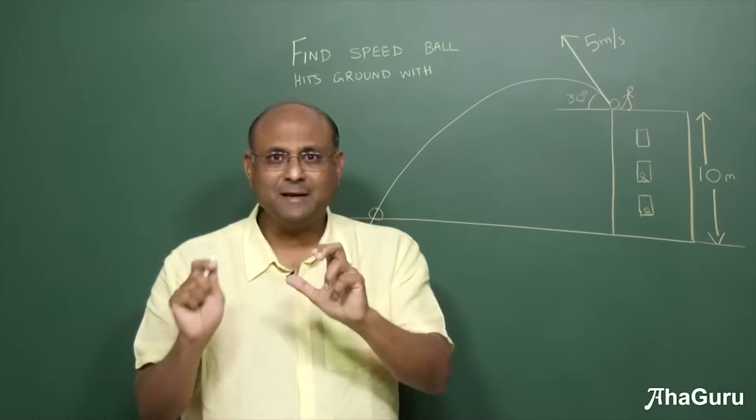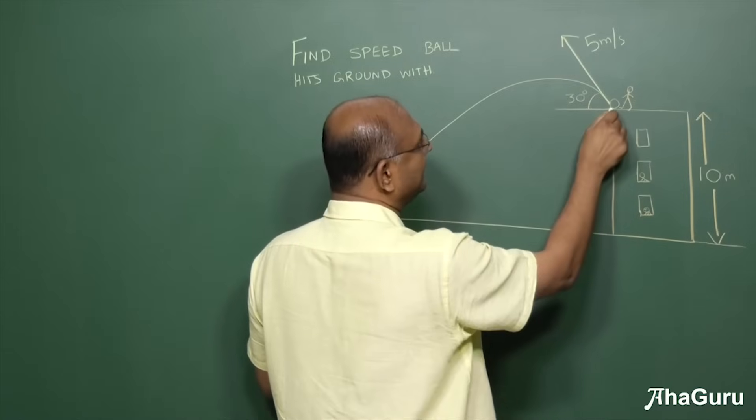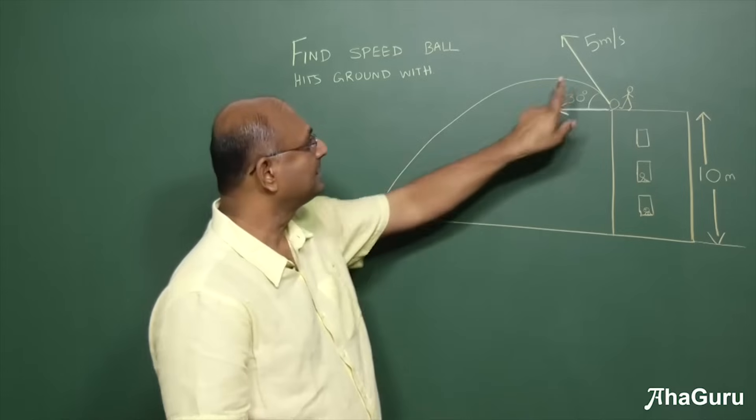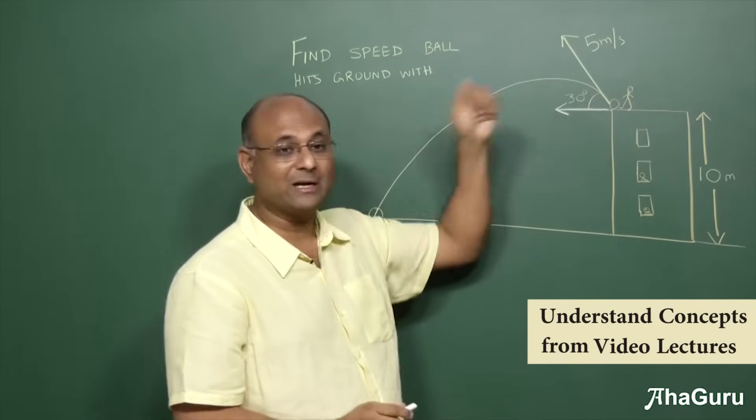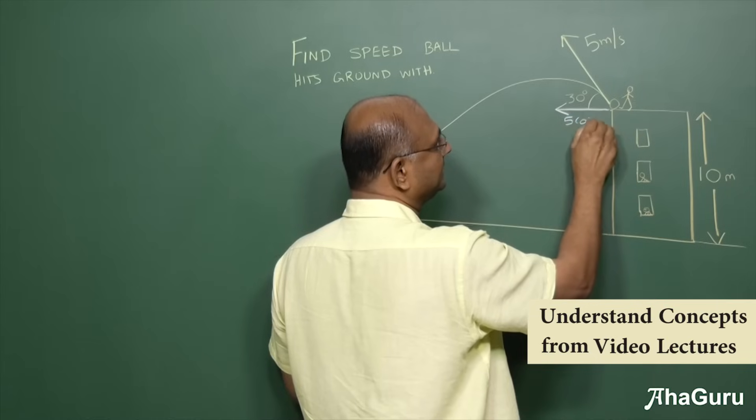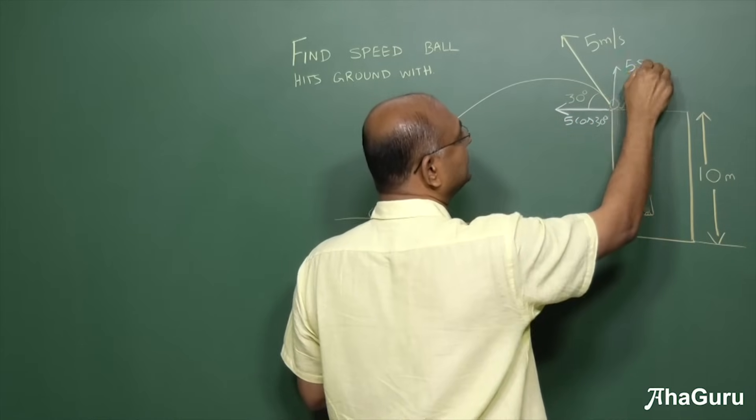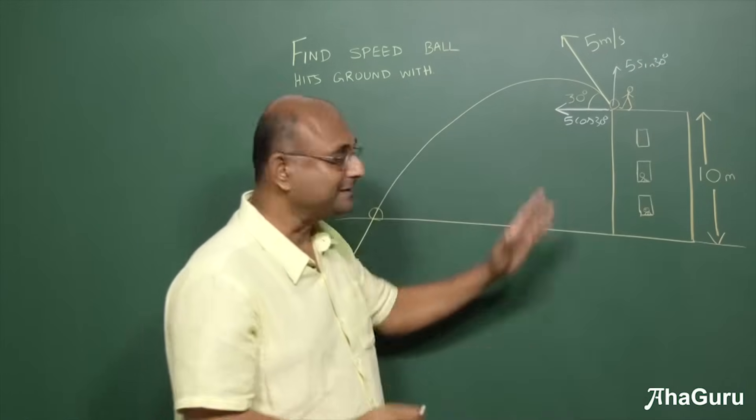Now, what is the usual way in which we would solve this problem? People would generally take this 5 and say here is a projectile problem. Let us resolve this velocity into the horizontal and vertical components. So 5 cos 30 degrees and then vertical component 5 sine 30 degrees meters per second.